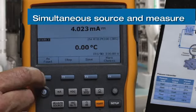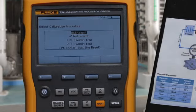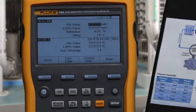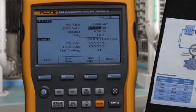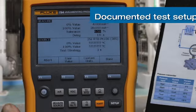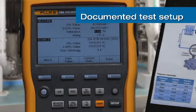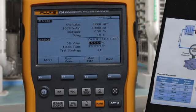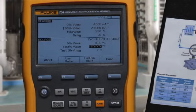We document the calibration as found for an instrument. We're going to measure 4 to 20 milliamps to a test tolerance of 0.5% while sourcing 0 to 300 degrees C.